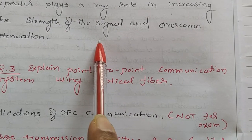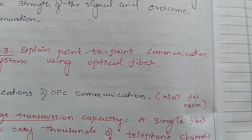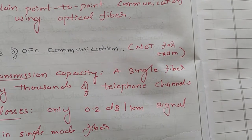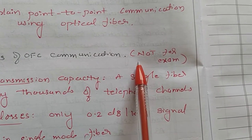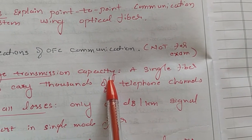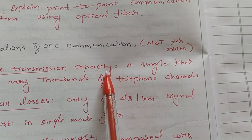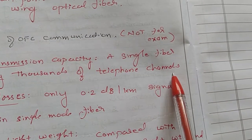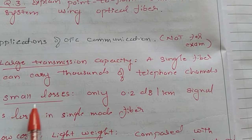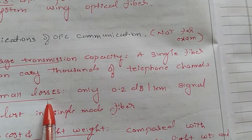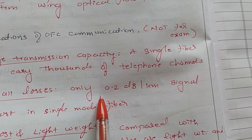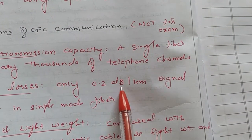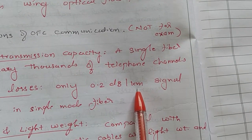This is the simplest application of optical fiber in a point-to-point communication system. The main advantages of optical fiber communication include: large transmission capacity — information carrying capacity is very high compared to metallic copper cable systems, and a single fiber can carry thousands of telephone channels. Loss is also very low: in copper cable systems, resistance increases with length, but in optical fiber the loss is only around 0.2 dB per kilometer in single-mode fiber, allowing long-distance transmission without repeaters.